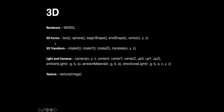With p5, there are a number of different 3D shapes that we can play around with. There is a box function, there's a sphere function, and then we can make more complex shapes using beginShape and endShape with vertex points for x, y, and z.